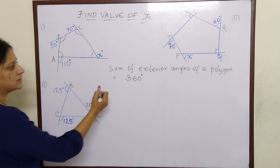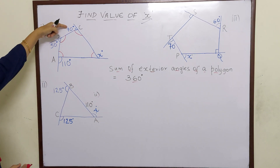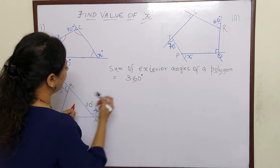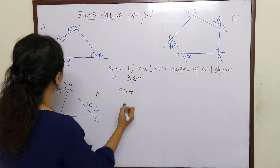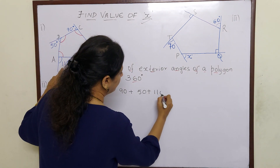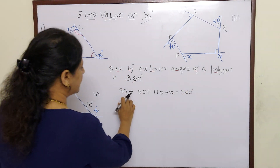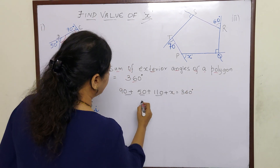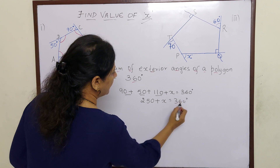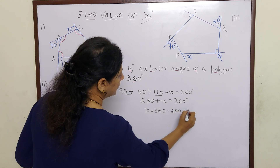We know that the sum of exterior angles of a polygon is equal to 360. That means when you add these exterior angles, their sum should be 360. So exterior angle 90 plus exterior angle 50 plus 110 and x together should form 360 degrees. So 90 plus 50 plus 110 is 250. Then 250 plus x is equal to 360, and therefore x is equal to 360 minus 250, which is 110 degrees.